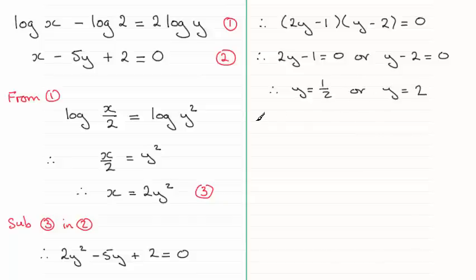And now I can substitute each of these values. Let's say we start with y equals a half. I substitute these into either equation one, two, or three. Obviously, three is the best one here. It gives us x straight away. So I'm going to substitute that into three. If we do that, we therefore end up with x equaling two times y squared. So y is a half. Two times a half squared gives me x equaling a half.